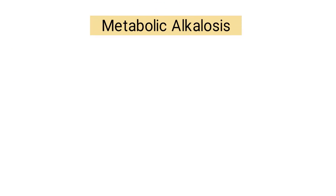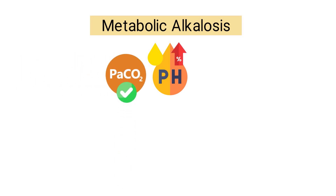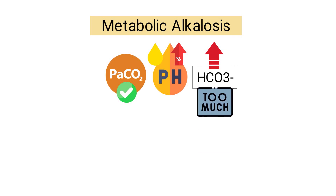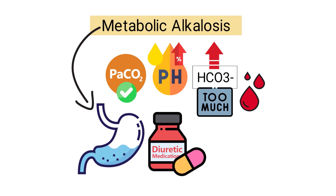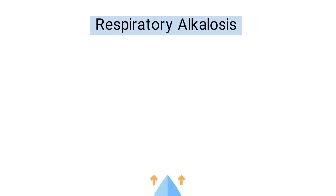Metabolic alkalosis is a condition where the blood pH is increased, PaCO2 is normal, and bicarb is also increased. Some of the most common causes of metabolic alkalosis include loss of stomach acid, diuretic medications, and hypokalemia.